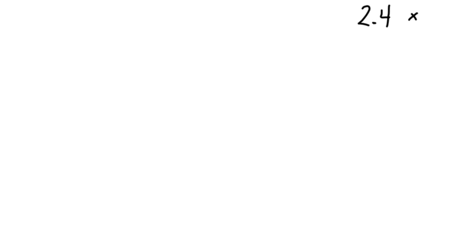I am going to teach you how to multiply a whole number and decimal times a whole number and decimal using the rectangular sections method. I am going to multiply 2 and 4 tenths times 3 and 5 tenths.